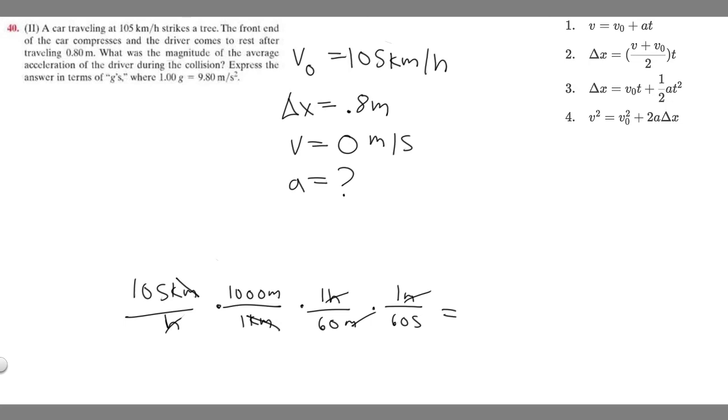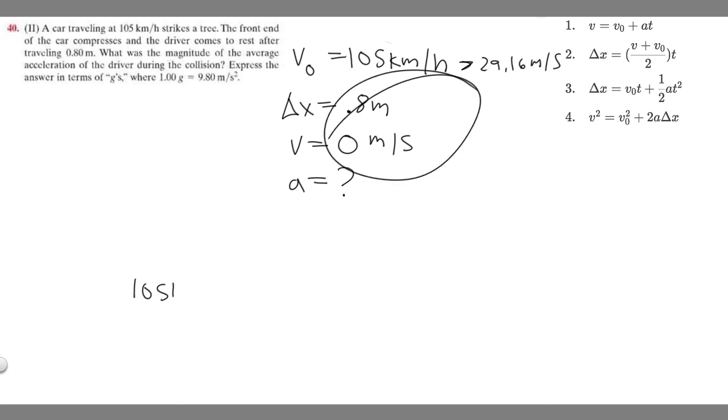So 105 times 1000, then multiply by 1 over 60 and multiply by 1 over 60, you should get 29.16 meters per second. So that's going to be our new initial velocity. Now we're going to actually be able to solve the problem. So now this is going to be 29.16 meters per second. We've got them all in the same units, now all we got to do is solve.